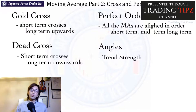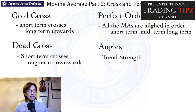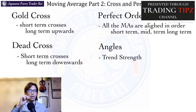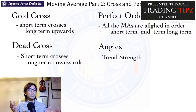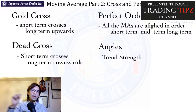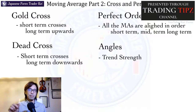You can also identify the strength of the market by looking at the angle of the MA. When the angle is steep, that means the trend is strong. And when it's slightly going up, that means the trend is not so strong. So depending on the angle of the moving average, you know exactly how strong the market is moving at that time.